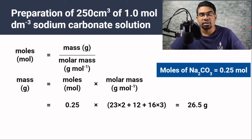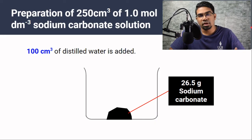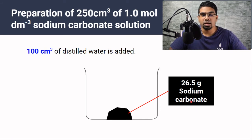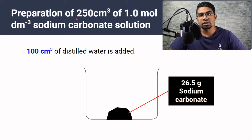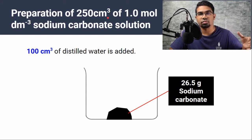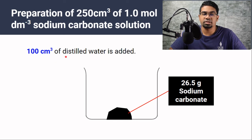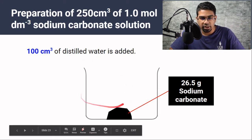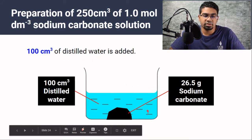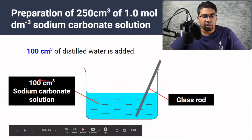Now we can go to the method. This method of preparation is by dissolving solid in a solvent. We need to weigh exactly 26.5 grams of sodium carbonate. The final volume we want is 250 cm³, but initially when we dissolve, we don't use 250 cm³ — instead we use about 100 cm³ of distilled water, which doesn't need to be accurate. We add the distilled water, stir with a glass rod, and get roughly 100 cm³ of sodium carbonate solution.